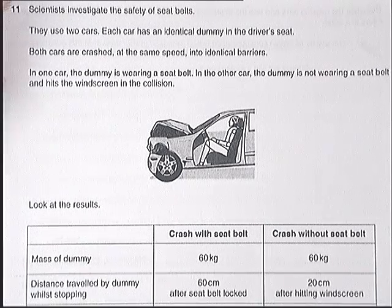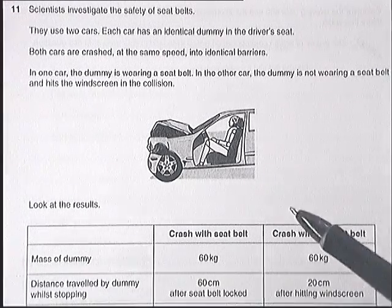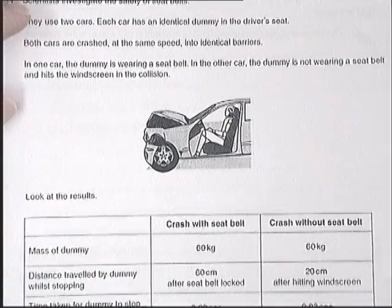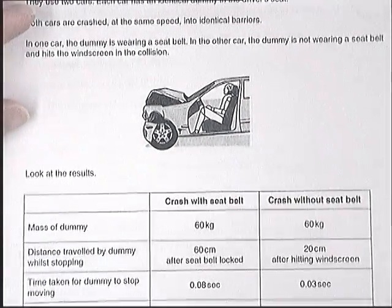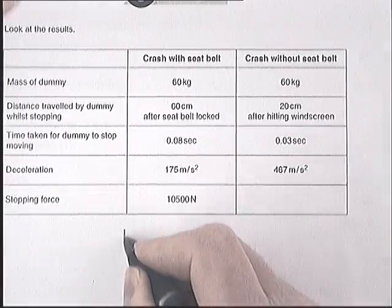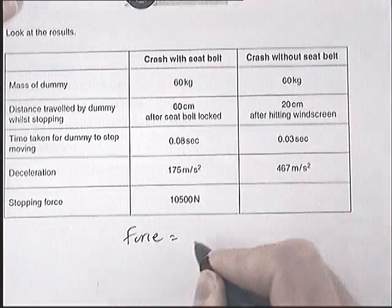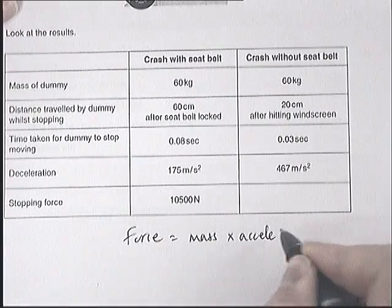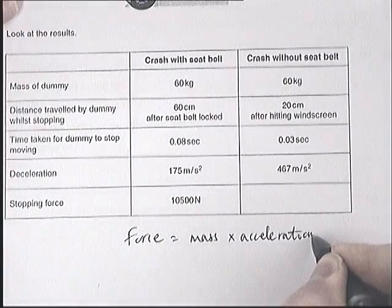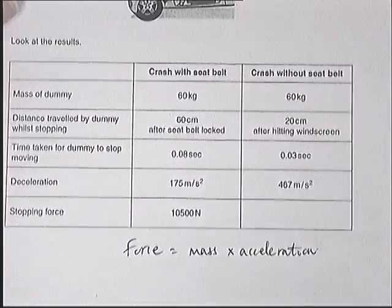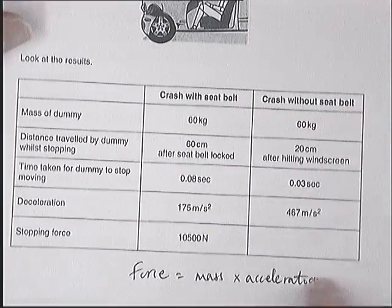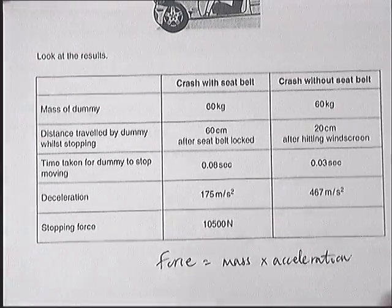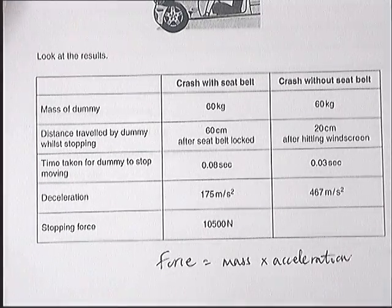So a question about crash test dummies, and really it's about Newton's second law. Newton's second law is in the equation sheet — a force is mass times acceleration. The question asks you to fill in the missing data, so calculate the stopping force in a crash without a seatbelt, and then discuss how the seatbelt actually limits the chance of injury.